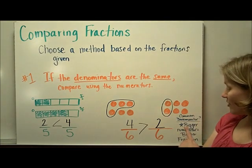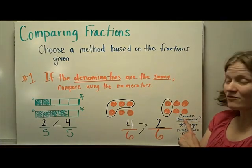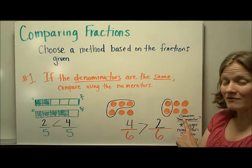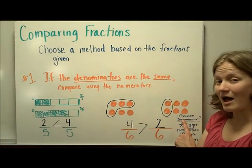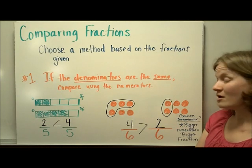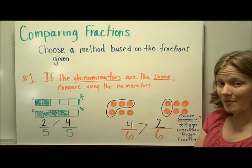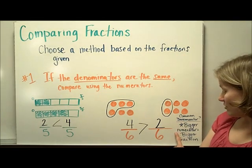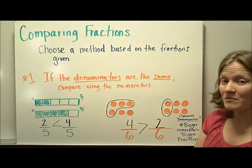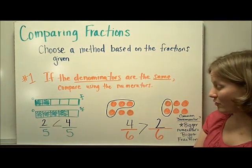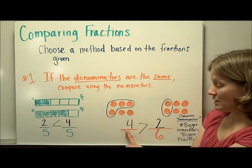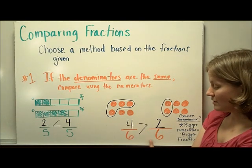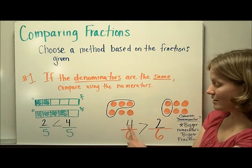To summarize: if the fractions have a common denominator, which means the denominator is the same, the bigger numerator means it's a bigger fraction. Here we have common denominators.